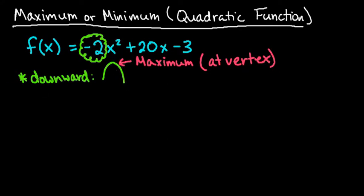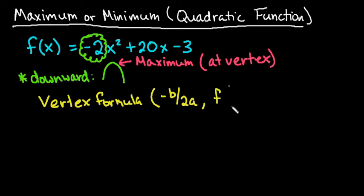So if it asks you to find the maximum point, what you would do is use the vertex formula. In the vertex formula, the x-coordinate is found by doing negative b over 2a, and the y-coordinate is just after I plug that value back into my function.